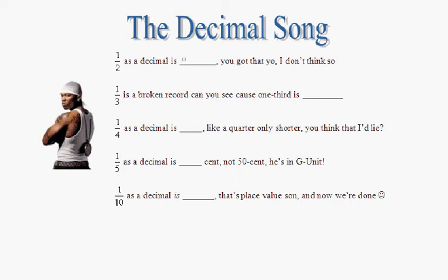One half as a decimal is .5, oh you got that yo, I don't think so. One third is a broken record can you see, cause one third is .33. One fourth as a decimal is .25, like a quarter, only shorty you think that I'd lie. One fifth as a decimal is 20 Cent, not 50 Cent, he's a G unit. One tenth as a decimal is .1, that's place value son, and now we're done.